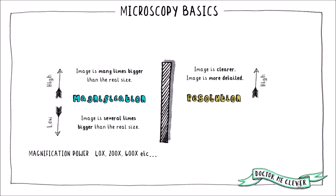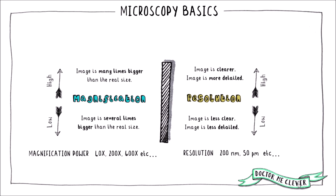If the resolution of an image is high, the image is clearer and more detailed. On the other hand, if it is low, the image is less clear and less detailed. Resolution is usually given in micrometres, nanometres, or picometres, and it is the distance between two points that can be resolved by the microscope.